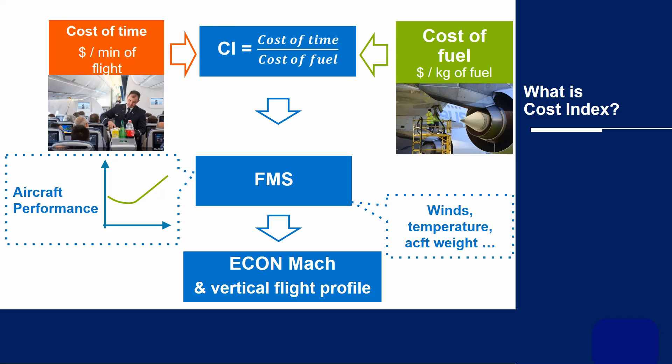You enter the Cost Index into the FMS. The FMS then combines this with its onboard performance database and produces a managed speed. Sure, if you vary the Cost Index, speed will change — but remember, that is not the purpose of Cost Index.